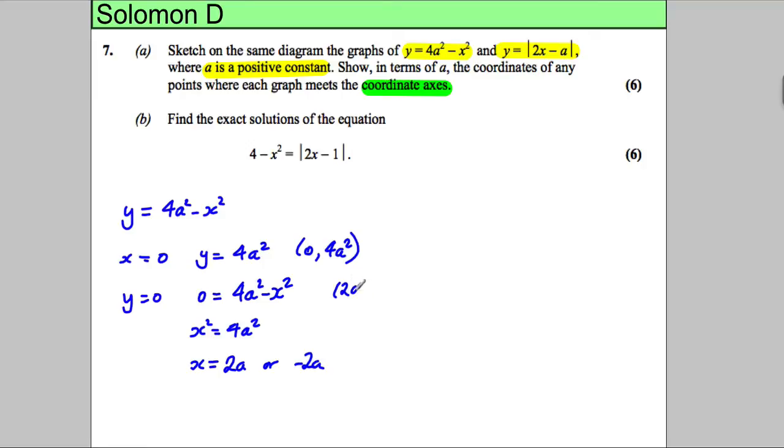So we've got coordinates here, 2a, 0, and we've got negative 2a, 0. It's a quadratic and it's n-shaped, so we've got a quadratic n-shaped. We probably have everything we need there to draw that one.